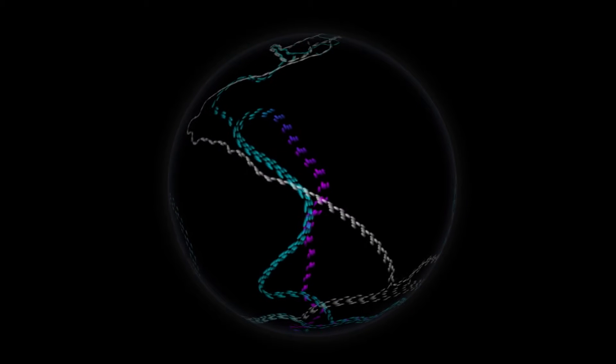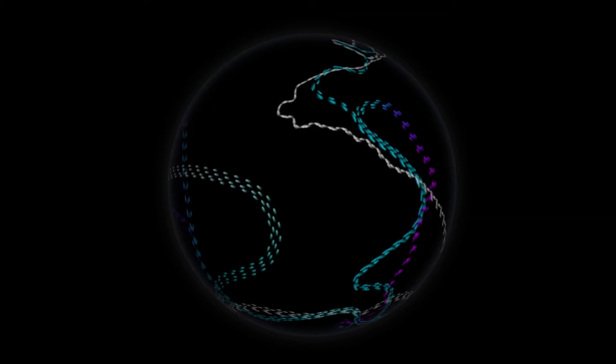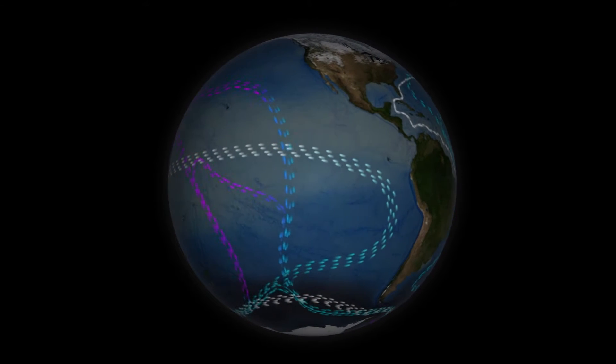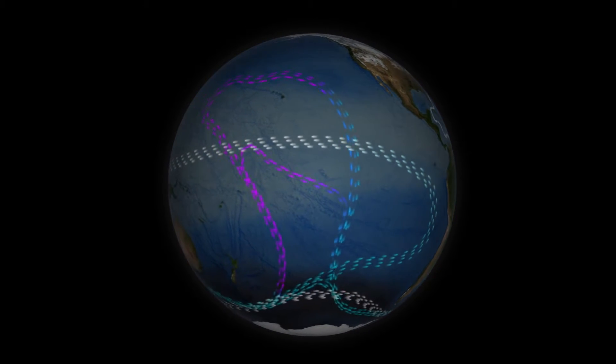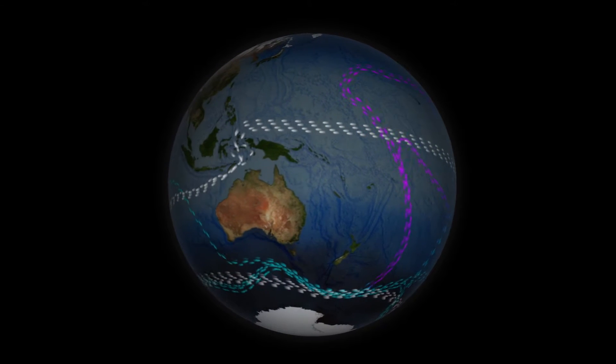As loops go, this one's a doozy and takes hundreds of years. This is Earth's conveyor belt, propelled by forces that change water density. It's called thermohaline circulation.